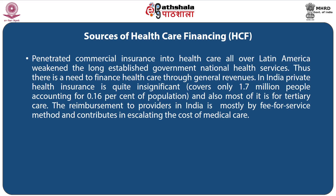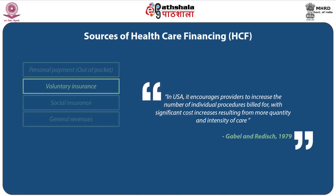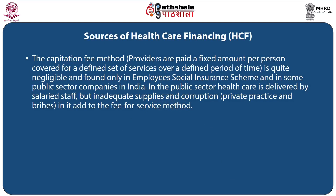Thus, there is a need to finance healthcare through general revenues. In India, private health insurance is quite insignificant, covering only 1.7 million people — 0.16 percent of the population — and most of it is for tertiary care. Reimbursement to providers in India is mostly by fee-for-service method, contributing to escalating costs of medical care. In the USA, it encourages providers to increase individual procedures billed for, with significant cost increases from more quantity and intensity of care. The capitation fee method — where providers are paid a fixed amount per person covered for a defined set of services over a defined period — is found only in employee social insurance schemes and some public sector companies in India. In the public sector, healthcare is delivered by salaried staff, but inadequate supplies, corruption, private practices and bribes add to fee-for-service costs.